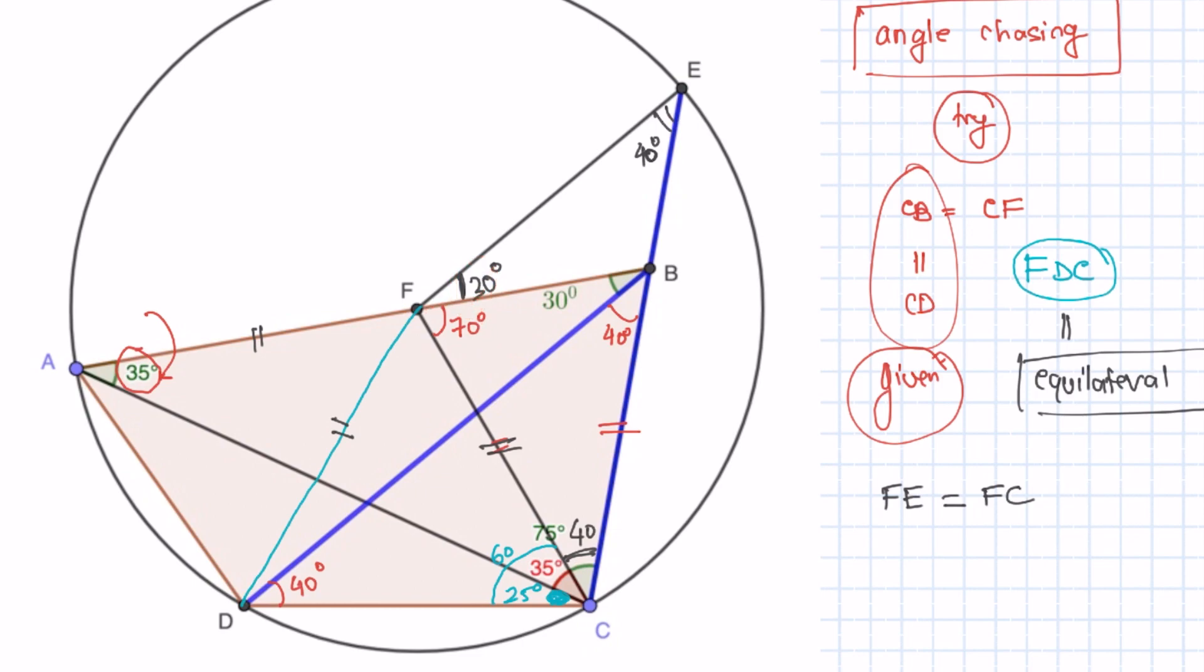Ok, so now we are almost done. We just need to show that FEC and DCB are congruent. Notice that these two angles are 100 degrees, which is great. CB is equal to CF and CD is equal to FE.